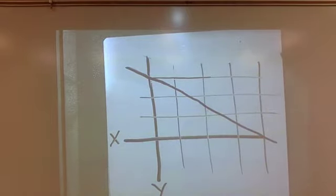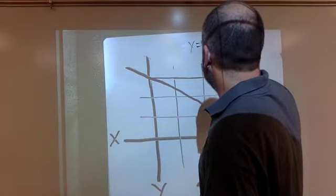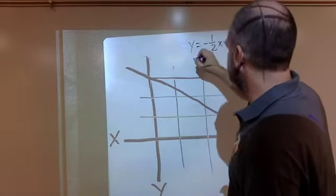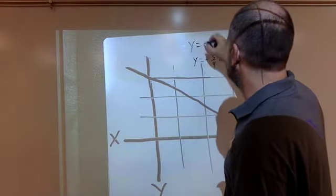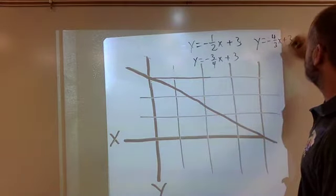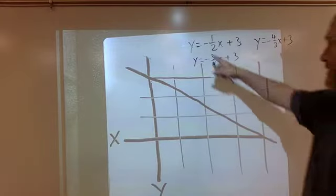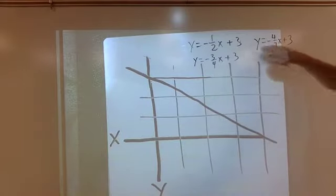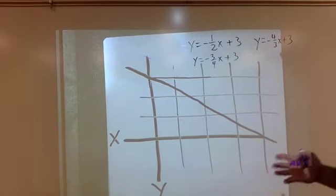All right, so say you have two choices that say plus 3. So you have Y equals negative one-half X plus 3. Then you also have Y equals negative three-fourths X plus 3. And let's give a third choice in here, Y equals negative four-thirds X plus 3. You can't eliminate any of those. So far, they all could be right because they all have a negative slope, which is what we need because the line's going down. And they all have a Y-intercept at plus 3, which is correct. They're all crossing at plus 3.